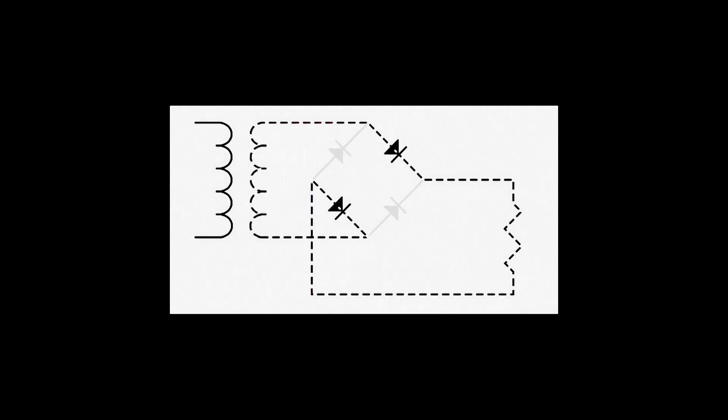The two grayed out diodes are reverse biased and therefore not conducting, where the two black diodes are forward biased and are conducting.